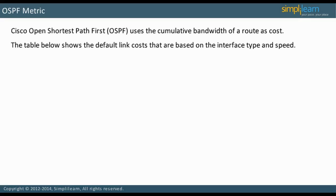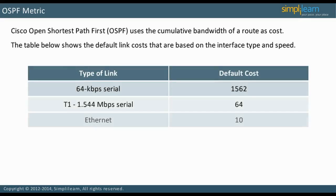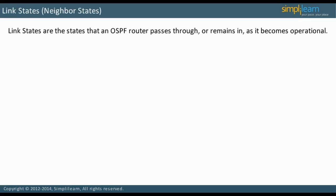Therefore, default costs are based on the interface type and speed. Take a moment to study the default link costs in the table on the slide. We will continue our discussion on OSPF metric in the next slide.